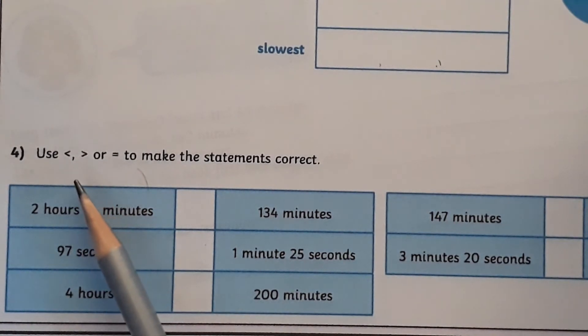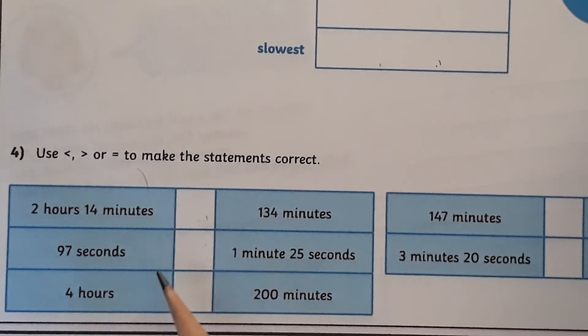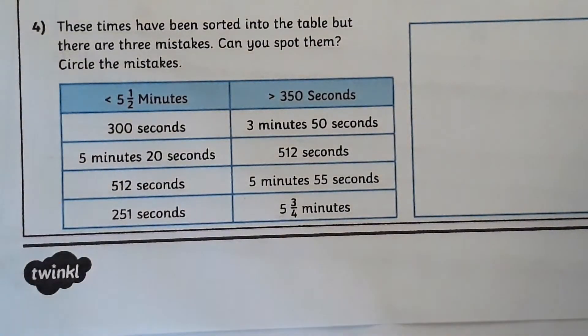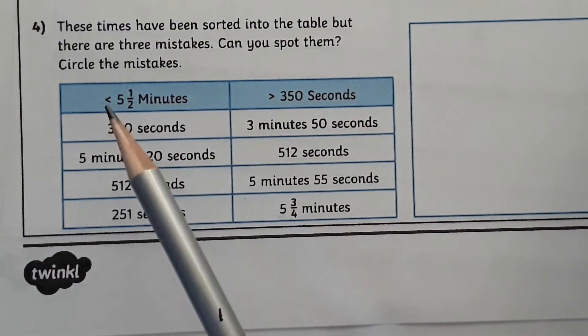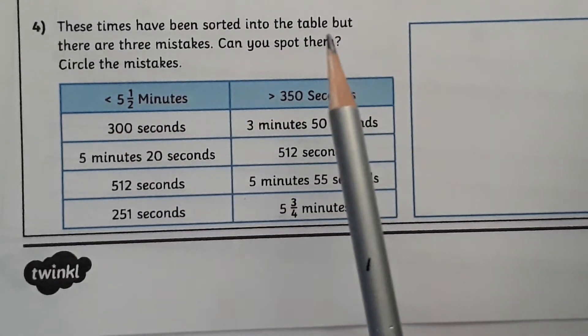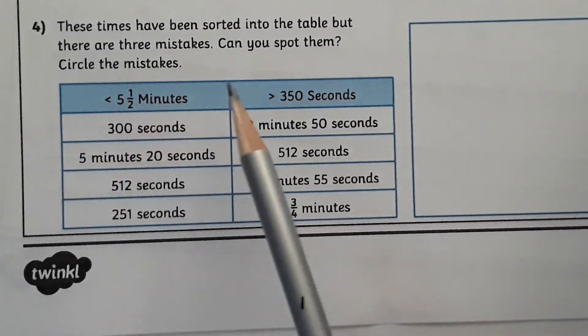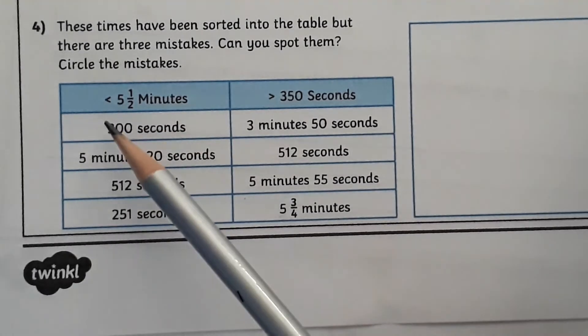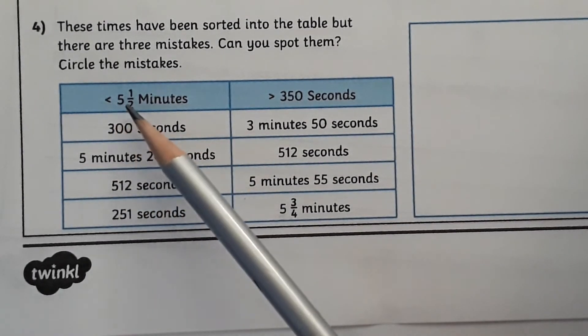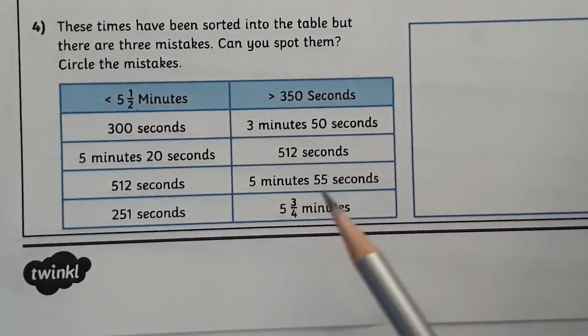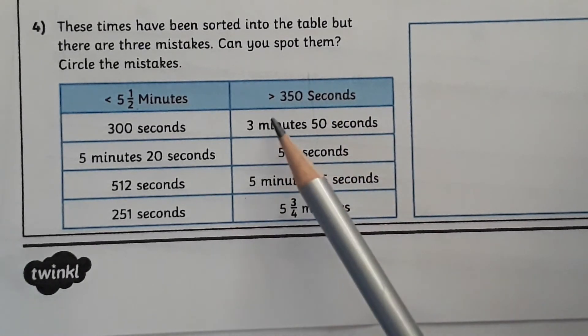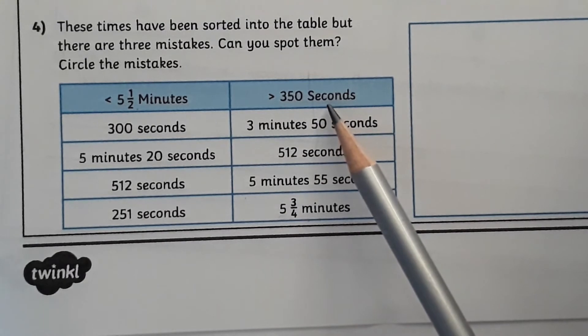And then you can see you've got to say whether the time is greater than, less than, or the same as to make the statements correct. Just work your way through. And my last little tip for today is the last question on the second sheet, where the table says these times have been sorted into the table, but there are three mistakes, can you spot them. In this column coming down, all of these times must be less than five and a half minutes. And all of these times in this column down must be greater than 350 seconds.